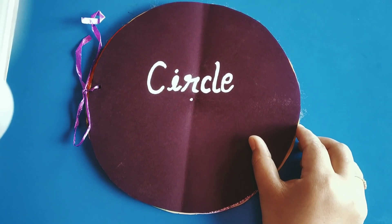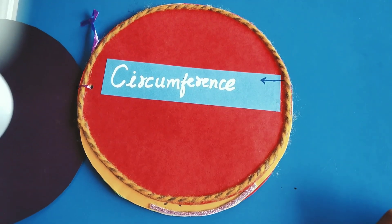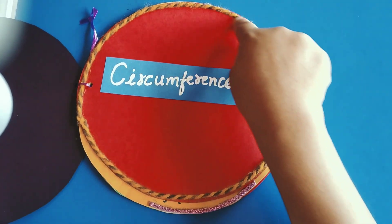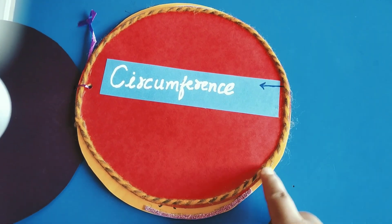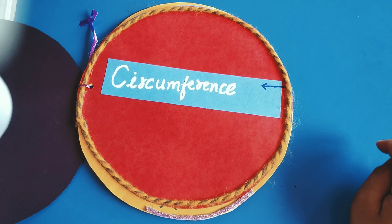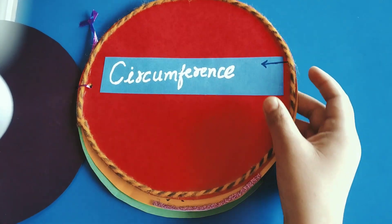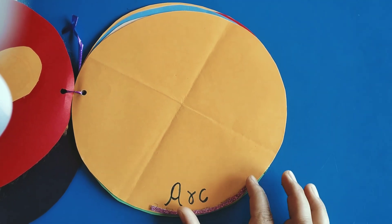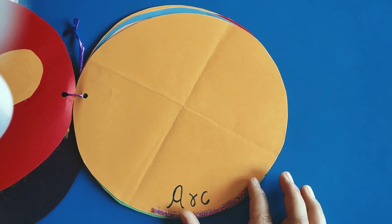So let us discuss the various parts of the circle. The first is circumference. Here you can see this boundary which I made with the thread — this is known as circumference. It is also known as the perimeter of the circle. If we take a portion of the circumference, that is known as an arc.